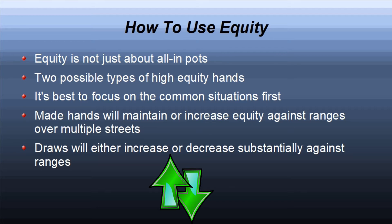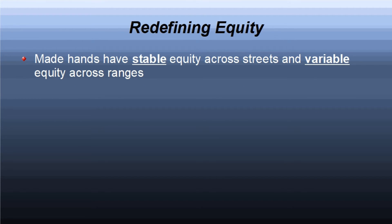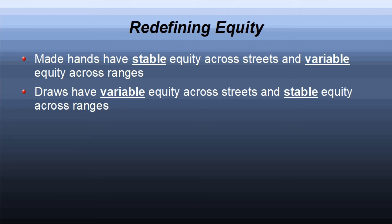Let's redefine made hands and draws based on the math of the equities. Made hands are hands that have stable equity with the progression of streets and variable equity across ranges. Draws are hands that have variable equity with the progression of streets and stable equity across ranges. Picture in your head how equity looks with a made hand versus a medium to weak range: on the flop you're way ahead, and on the turn you're almost always even further ahead — your equity is stable over progressing streets.